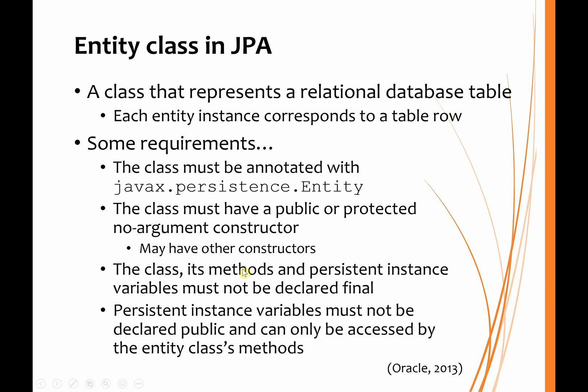The class, its methods, and any persistent instance variables must not be declared final, and the persistent instance variables must not be declared public. They have to be private, and can only be accessed by the Entity class's methods. These requirements need to be in place so that the JPA persistence provider is able to create instances of this class, and then populate the private persistent instance variables with data from the database, or get data from the object to put into the database.